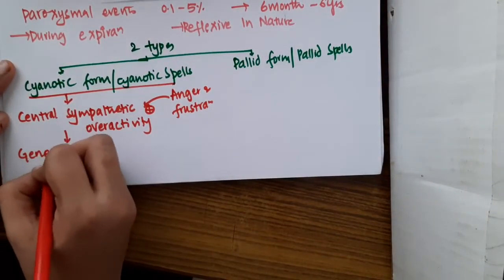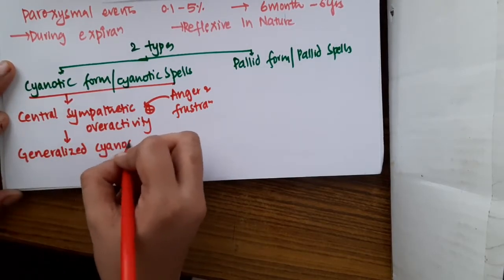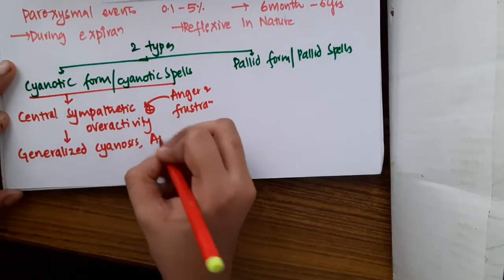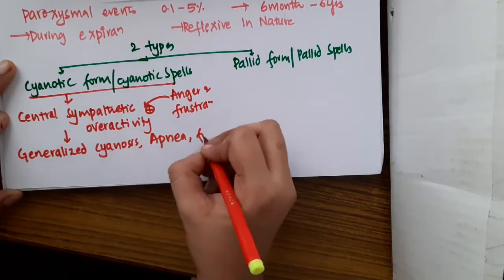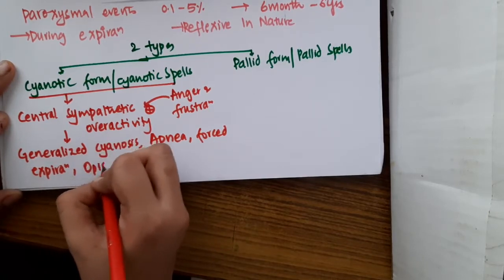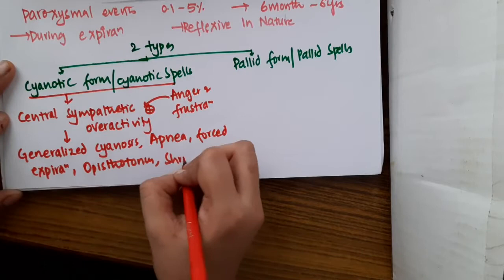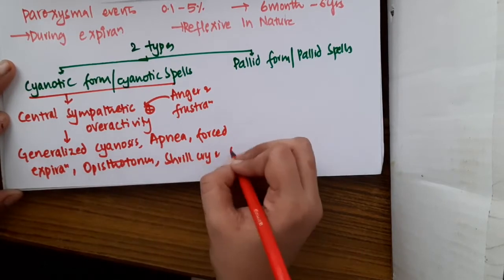So this anger and frustration will activate the central sympathetic system but this becomes overactivated and as a result the child develops generalized cyanosis, apnea, forced expiration, then there will be opistotonous, shrill cry and bradycardia are seen.